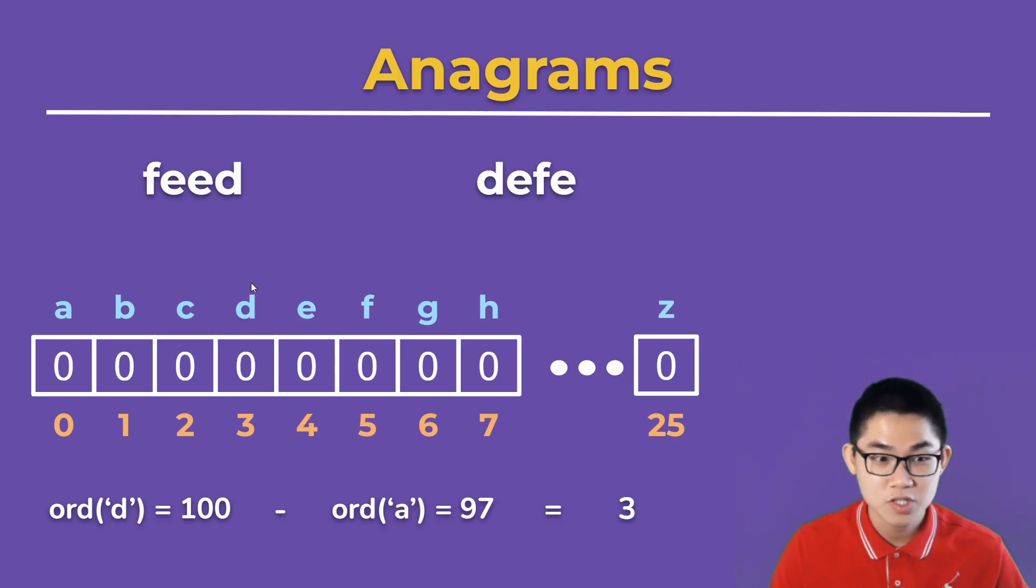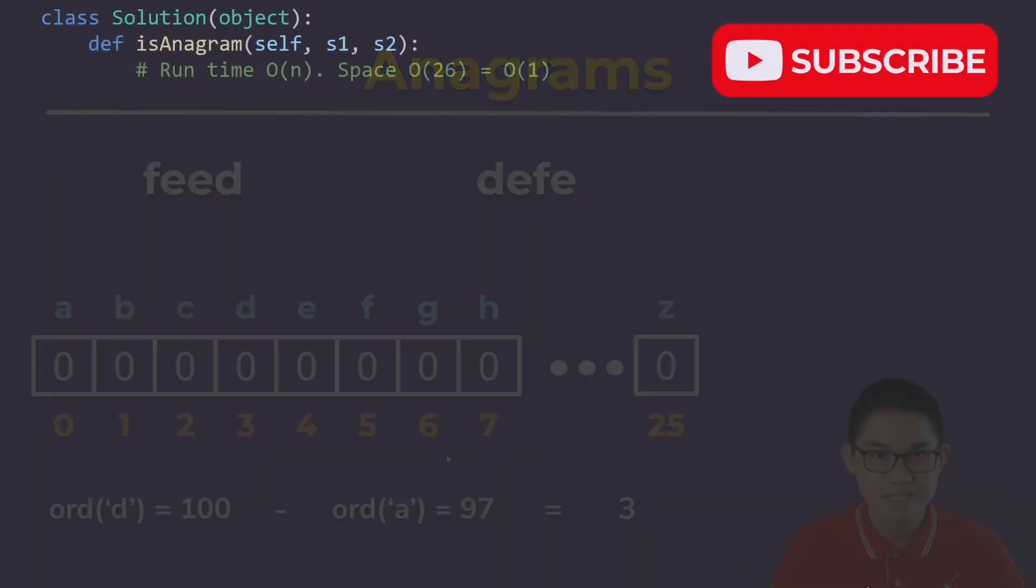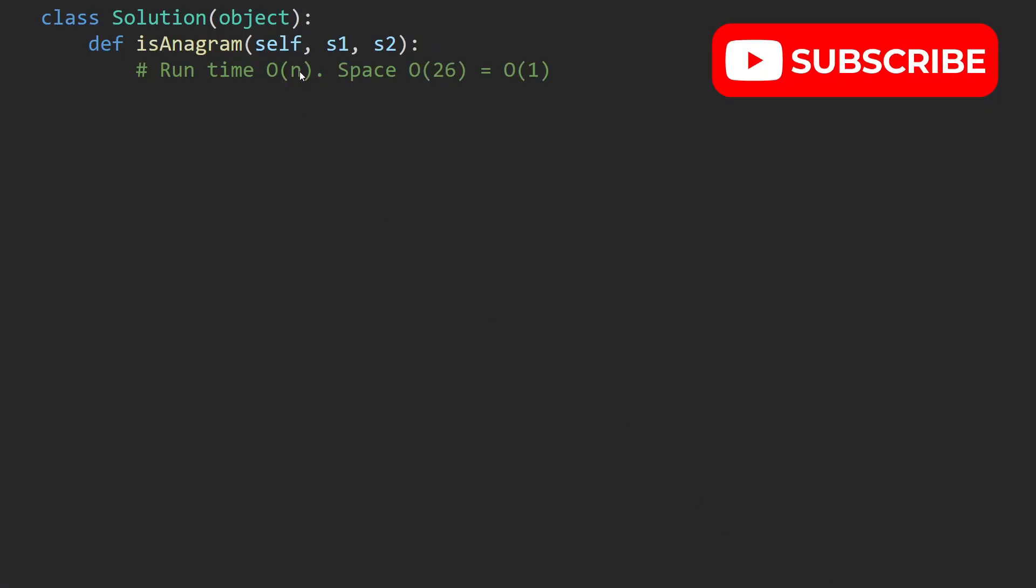So the location of D is at index 3. If we're going through the first word, we will increment the 0 to a 1. This solution is O(N) because we don't use sorting, so it's not N log N like last time.